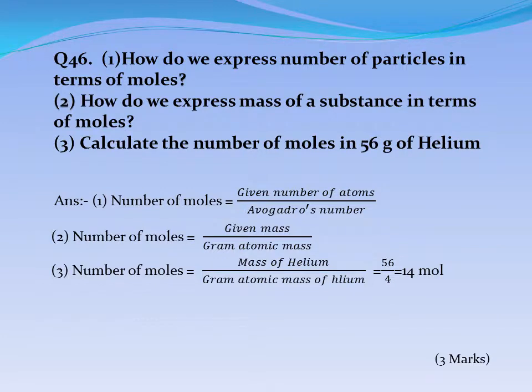Question No. 46: 1. How do we express the number of particles in terms of moles? 2. How do we express the mass of a substance in terms of moles? 3. Calculate the number of moles in 56g of helium. Answer 1: Number of moles = given number of atoms ÷ Avogadro's number. Answer 2: Number of moles = given mass ÷ gram atomic mass. Answer 3: Number of moles = mass of helium ÷ gram atomic mass of helium = 56 ÷ 4 = 14 moles.